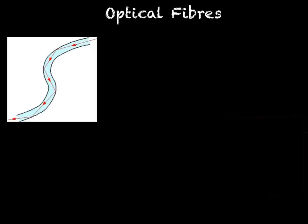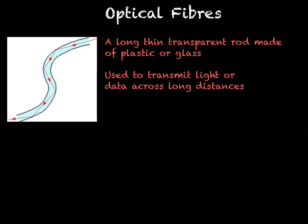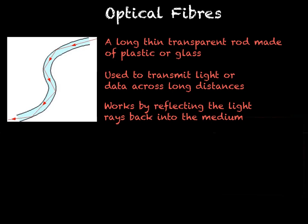An optical fibre is a long, thin, transparent rod made of glass or plastic. It is used in order to transmit light or data across large distances. It works by continually reflecting the light back inwards. As we can see, the light is reflected back into the medium each time. This occurs due to the critical angle as well as total internal reflection.